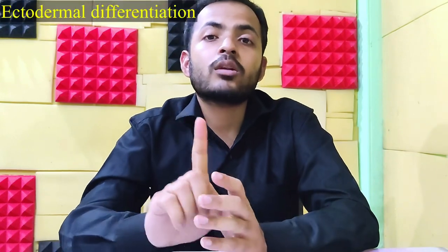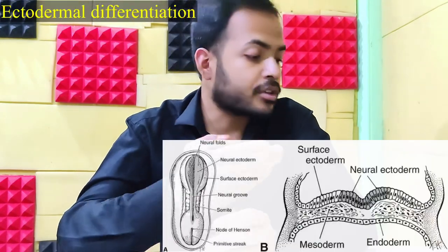At the beginning of the fourth week, there are four components: ectodermal differentiation, mesodermal differentiation, embryonic folding, and endodermal differentiation. First, let's look at ectodermal differentiation.